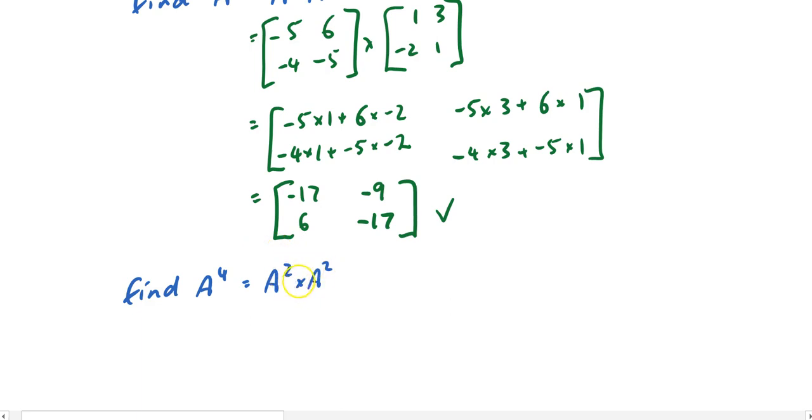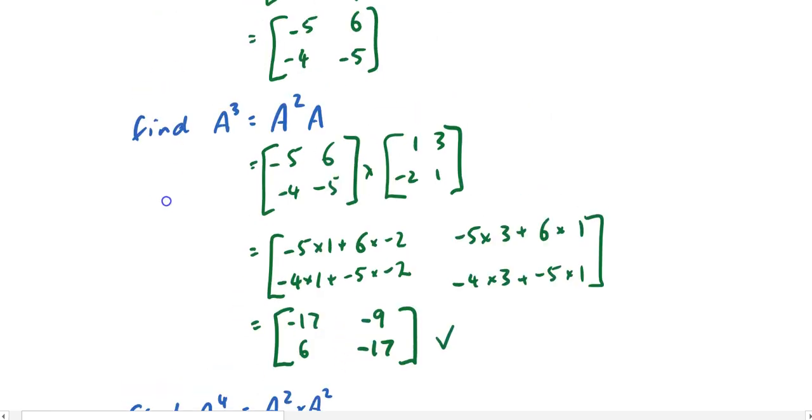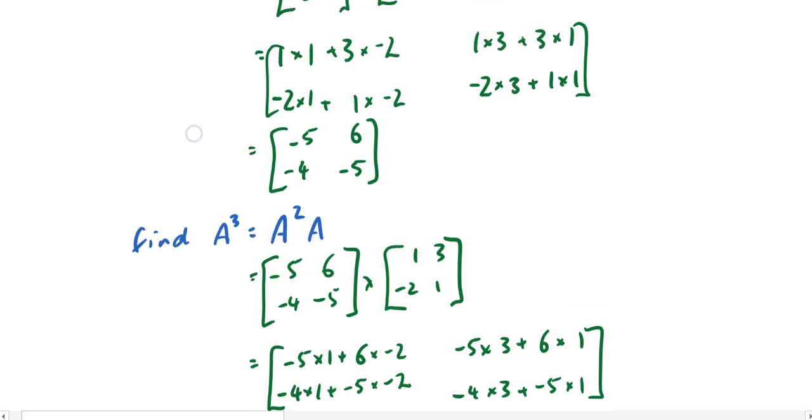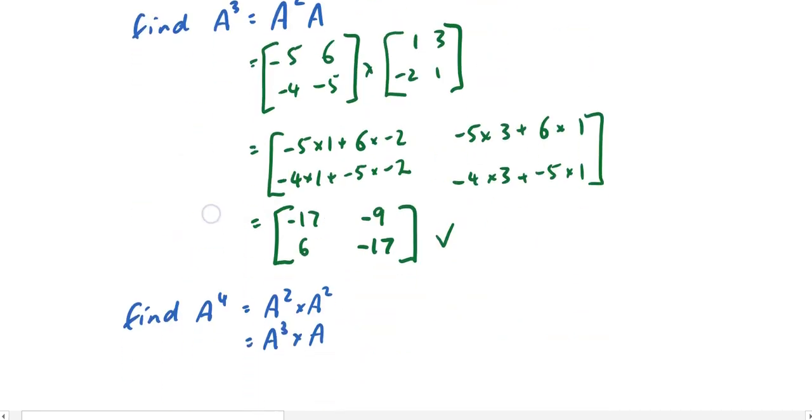Because remember that the order you multiply things in matters. So you actually have to do A to the 3 times A, because you have to step through each step in this process. Each one changes the matrices, which changes the matrices after it. So if you were to do A squared times A squared, that is not going to work.